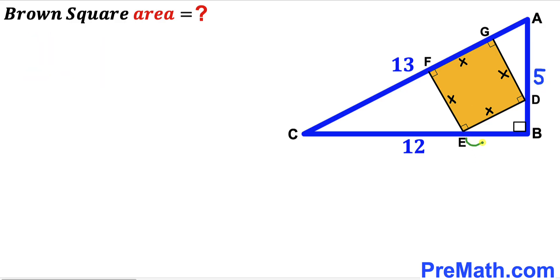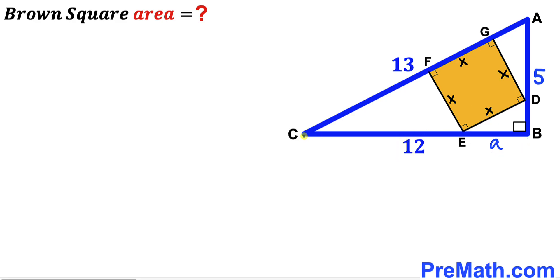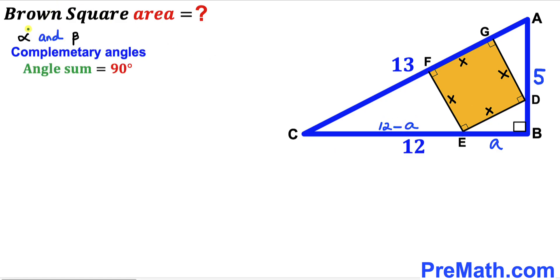Let's label the small segment EB as lowercase a. Since the whole side BC is 12, segment CE is going to be 12 minus a. Now let's assume alpha and beta are two complementary angles — that is, alpha plus beta equals 90 degrees. This angle in triangle ABC is alpha, the right angle is 90 degrees, so the remaining angle is beta.